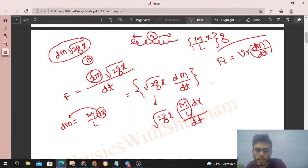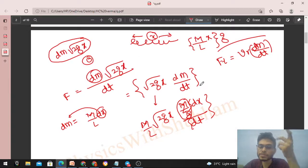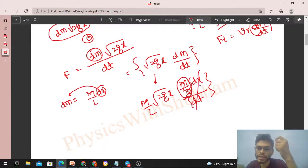Aur M by L to bahr aa gya. So aap dx by dt kya hai? Kitnay rate se aapka joh length chain ka woh increase kar raha hai, and that is nothing but the speed at that particular time. Aur speed kitna hai? Again under root 2gx. So check kar ho kitna aa raha hai? 2gx into M by L.